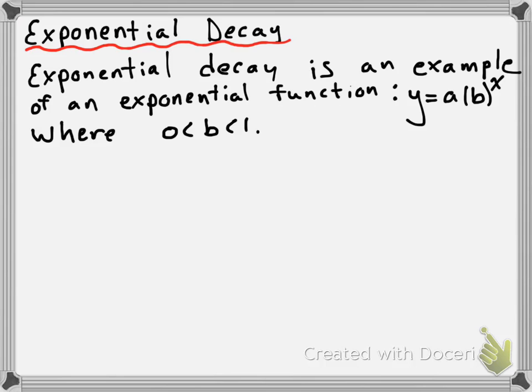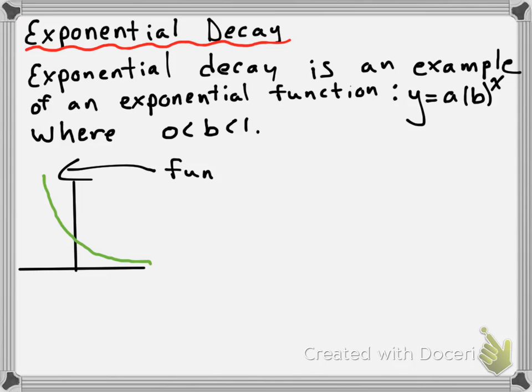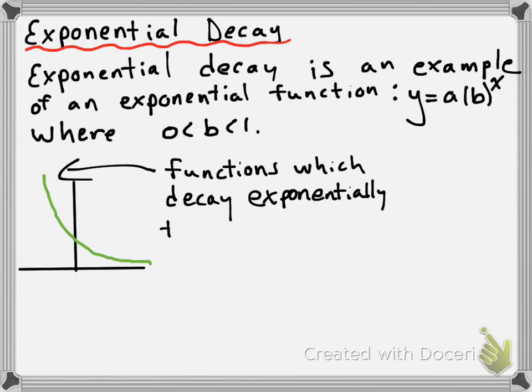So in terms of a graph of exponential decay, it's going to look something like this. One thing I want you to notice is that when we had exponential growth, the function grew quickly. Well, if it's exponential decay, functions which decay exponentially are going to decrease very quickly — they're not going to be increasing quickly, they're going to be decreasing quickly.